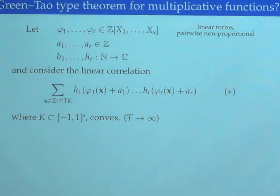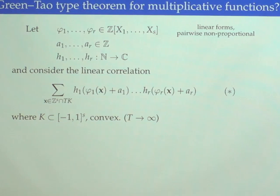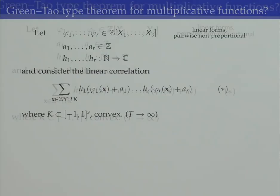They should have integer coefficients. And together with these forms, we pick r constants a_1 up to a_r, and r arithmetic functions. We then consider the linear correlation that arises by evaluating these arithmetic functions h_1 up to h_r at the respective form shifted by the respective constants.